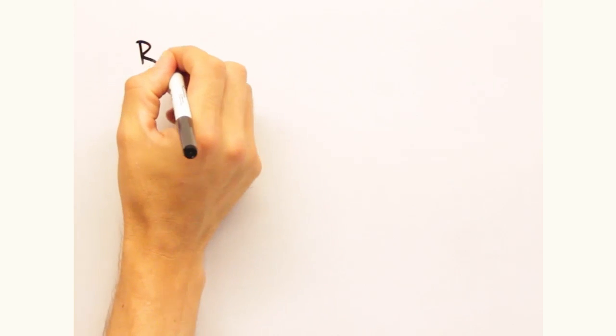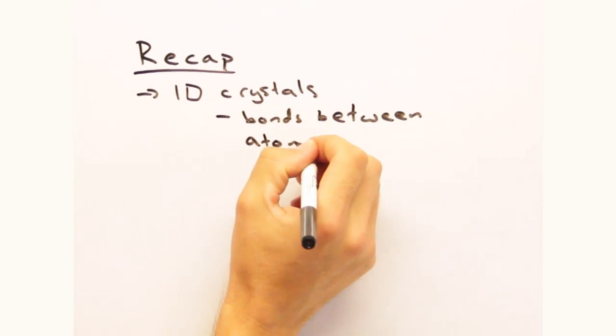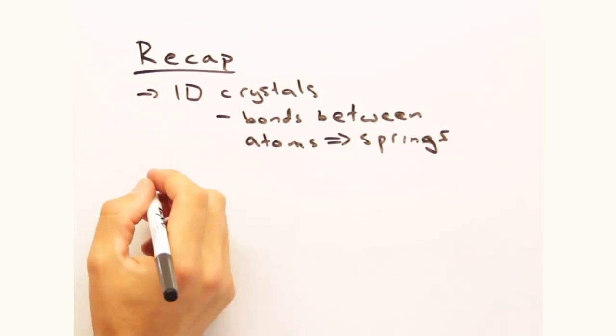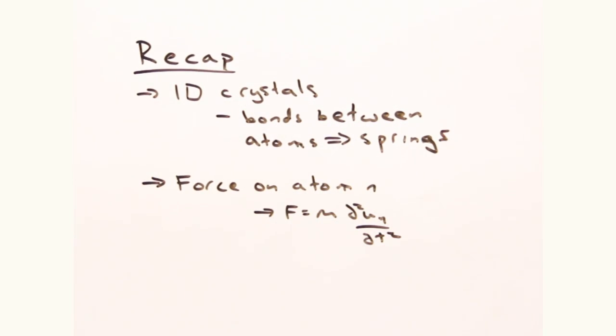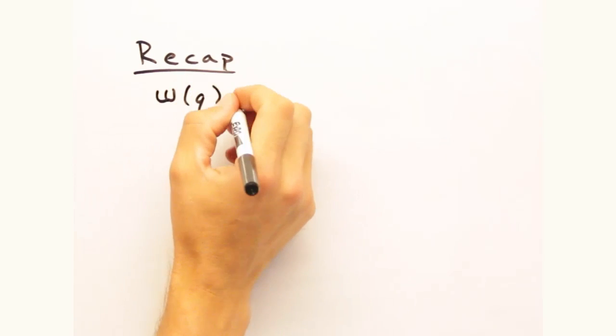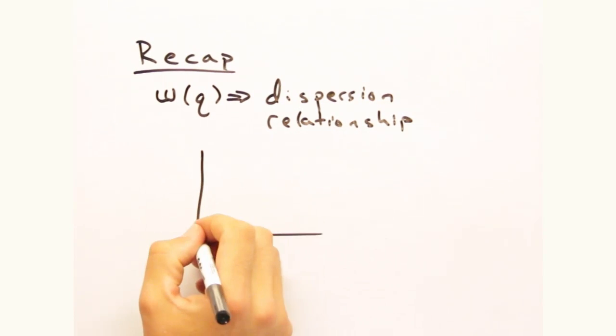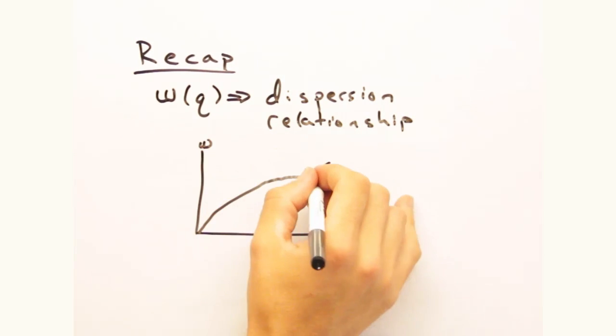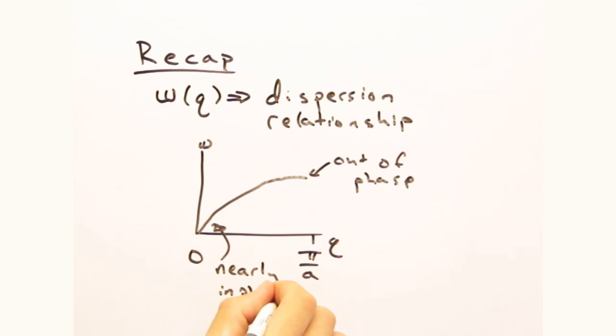So we've done a fair bit today. It might be a good time to do a recap. Yeah, so we started with a one-dimensional crystal where we treated the bonds between atoms as springs. From that we developed an expression for the force acting on one particular atom at position n. And then, using a plane wave approximation for the displacement, we were able to develop a relationship between the wave vector and the frequency of the atom oscillations. We also found that the motion of the atoms starts as in phase movement near the origin and slowly becomes more and more out of phase.